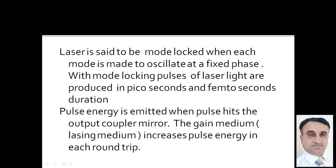With the help of mode-locking, a laser is said to be mode-locked when each mode is made to oscillate at a fixed phase. In mode-locking, we fix the phase of the oscillation, and with this, pulses of laser light are produced in picosecond and femtosecond durations — they have very small duration on the order of picoseconds or femtoseconds.